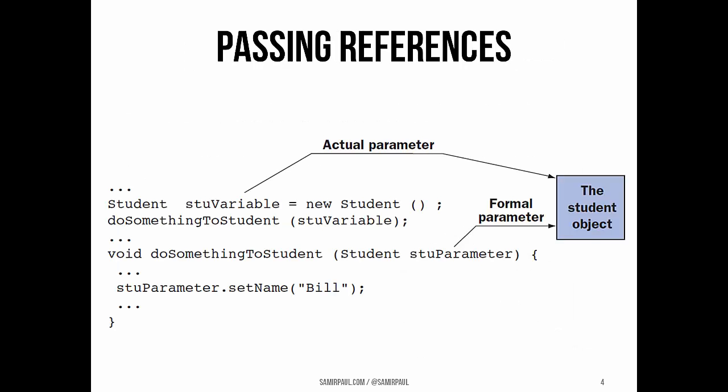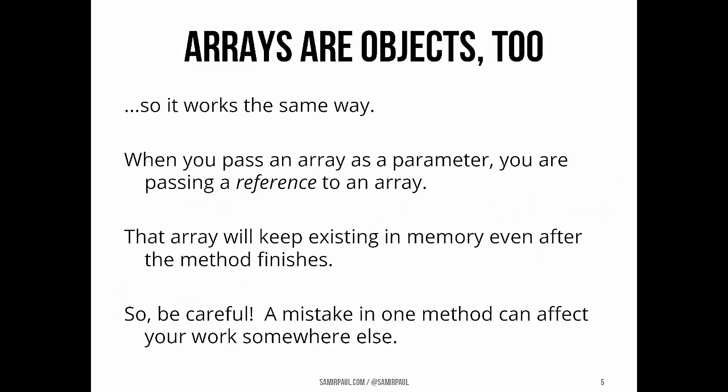So if you imagine the consequences of this idea, suppose I have some student object named stuVariable and then I call a method doSomethingToStudent and I pass stuVariable as a parameter. Well, if stuParameter changes stuParameter's name to Bill, because both stuVariable and stuParameter refer to the same object, that change persists. stuVariable's name is changed to Bill even after the execution.